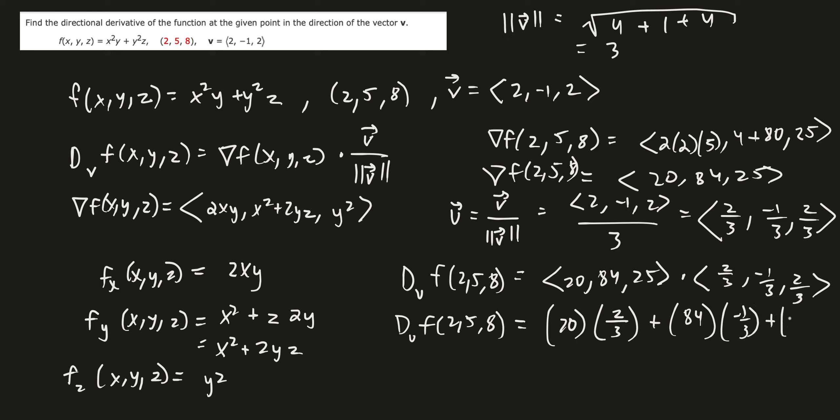This is 40 thirds, minus 84 thirds, plus 50 thirds. So just to write this as 40, minus 84, plus 50, which is 6 thirds, or 2.